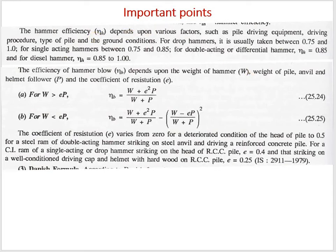Hammer efficiency depends on the pile driving equipment, driving procedure, type of pile, and ground condition. For the conventional drop hammer, the hammer efficiency is 0.75 to 1.0. For a single acting hammer it is 0.75 to 0.85, for a double acting hammer it is 0.85, and for a diesel hammer it is in the range of 0.85 to 1.0. The efficiency is maximum for the diesel hammer, meaning you get the best pile capacity with it.